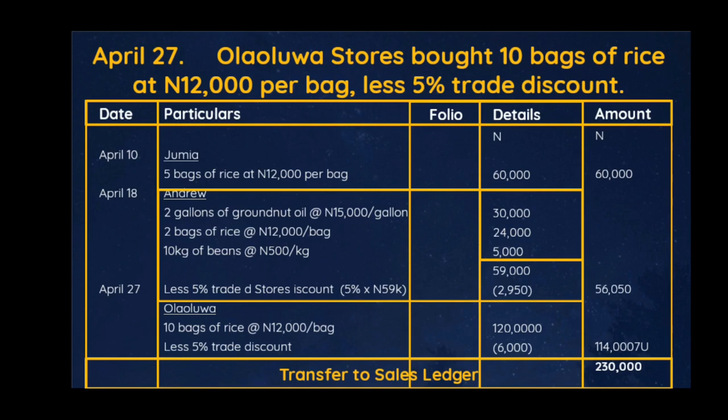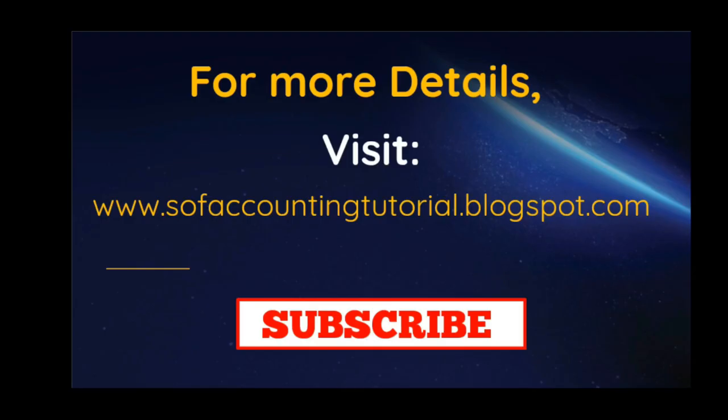This total of 230,000 naira is what will be transferred to the sales ledger. When we are preparing the accounts, 230,000 will be transferred into the credit side of the sales ledger, while we open personal accounts — debtors accounts — for Jumia, Andrew, and Ololua. On Jumia's account we debit 60,000 naira; Andrew's account is debited with 56,050 naira; Ololua's account is debited with 114,000 naira. For more on this, check out the video on ledger.